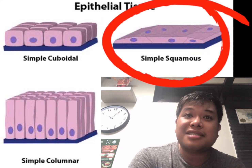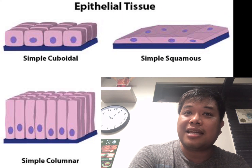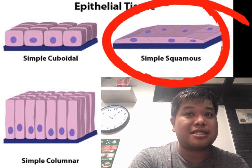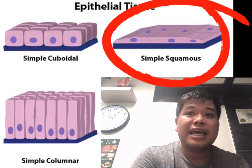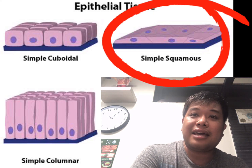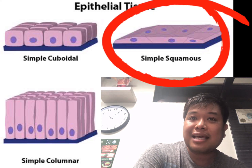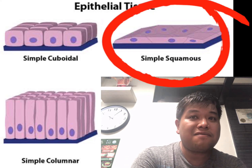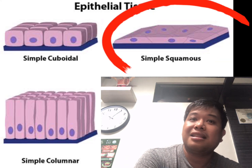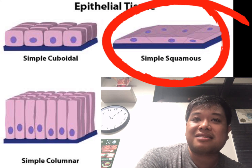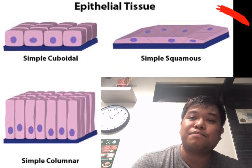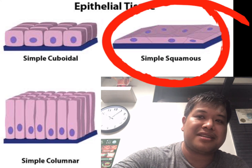The squamous cell is thin with a scaly, flattened appearance on the surface. It is located in the kidney glomeruli, ear sacs, lining of the heart, blood vessels, lymphatic vessels, and lining of the ventral body cavities.